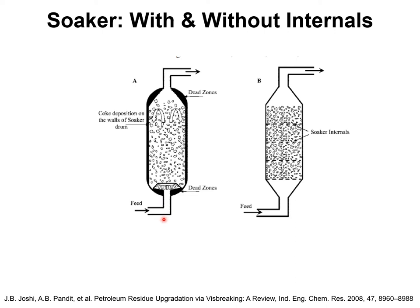One possibility to reduce or avoid over-cracking is to introduce staging of the liquid phase in the soaker. In the paper by Joshi, from which this figure has been taken, we show a configuration of a soaker vessel in which soaker internals are introduced in the form of perforated plates that serve to reduce the back-mixing in the liquid phase.